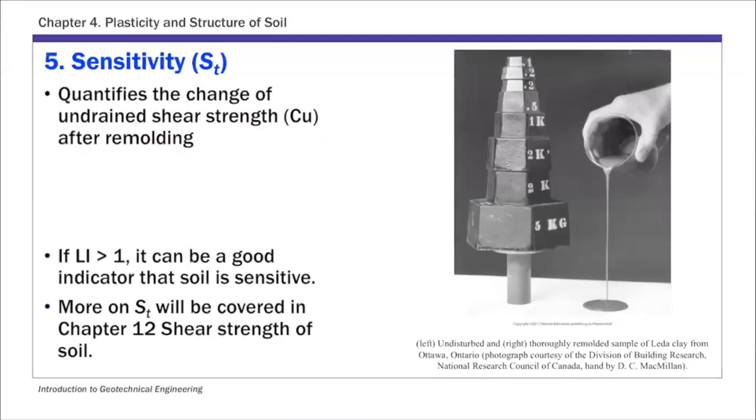And the last one, the fifth one, is sensitivity. Sensitivity quantifies the change of undrained shear strength CU after remolding. The definition of this ST sensitivity is CU—which is undrained shear strength, again something we'll cover in Chapter 12—CU of undisturbed over CU of remolded.